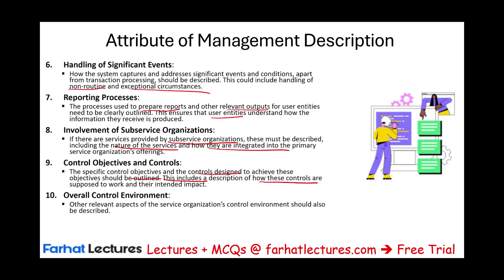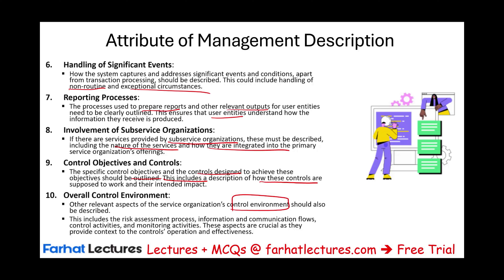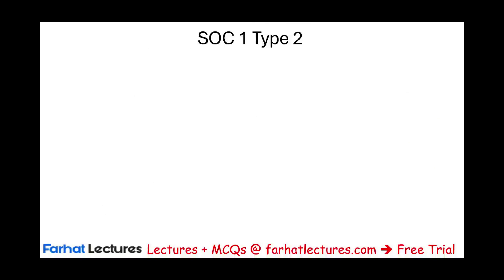The overall control environment should be described as well, since SOC 1 relates to internal control over financial reporting. This means being familiar with the internal control framework — control activities, monitoring, information systems and communication, and risk assessment. These must be spelled out. The key difference between SOC 1 type 1 and type 2 is that type 2 looks at a period of time and evaluates the effectiveness of controls over that period.